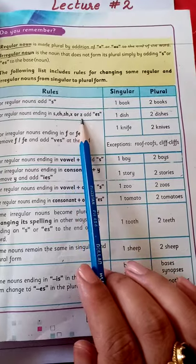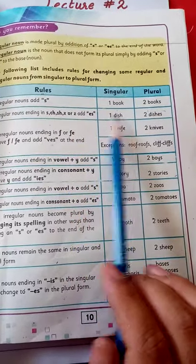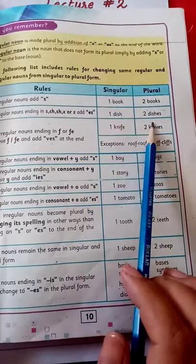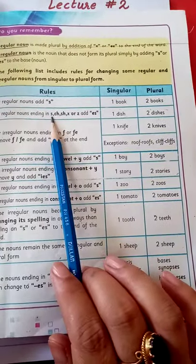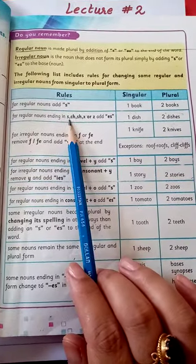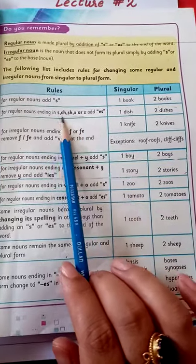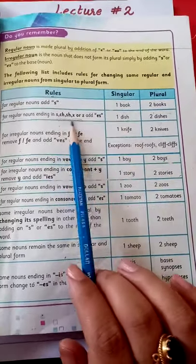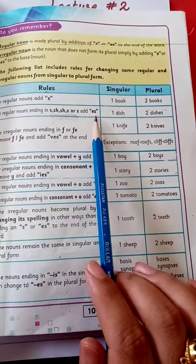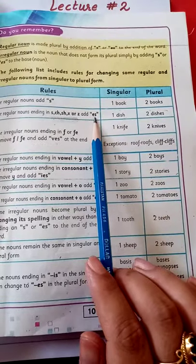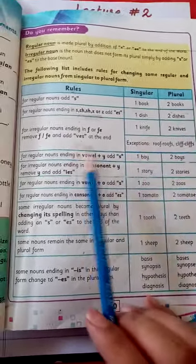For regular nouns ending in s, ch, sh, x, or z, add -es. For example, dish becomes dishes. So if a singular noun ends with any of these letters, we add -es. For example, knife becomes knives, but there are also exceptional cases.